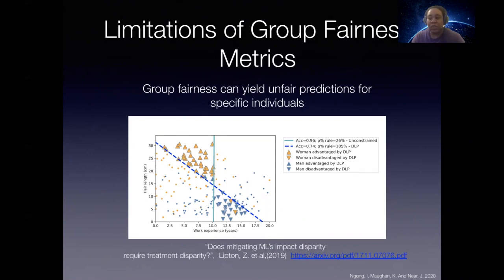As we continue to see deep learning models being used in automated systems for hiring, firing, and providing risk assessment for individuals, we want to make sure that we can say that the prediction by these models was based on the individual, and not solely their affiliation with a particular group. So if an individual applied to school and decided to challenge the school claiming a decision by an automated model predicted that they should be rejected, we should be able to show that this decision was not based on the person belonging to a protected group, but rather because of their individual achievements or lack thereof.